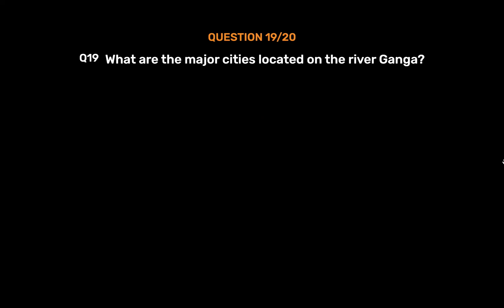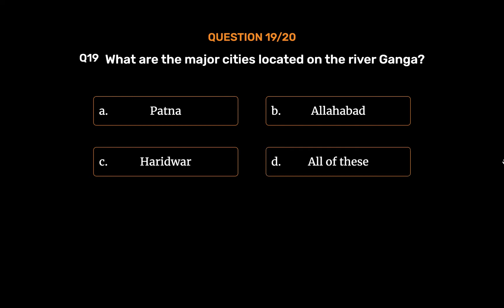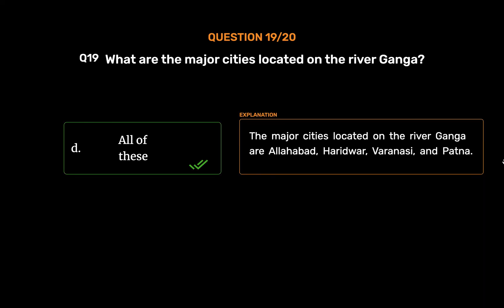Question number 19. What are the major cities located on the river Ganga? Option A: Patna. Option B: Allahabad. Option C: Haridwar. Option D: All of these. The correct answer is Option D, All of these. The major cities located on the river Ganga are Allahabad, Haridwar, Varanasi and Patna.